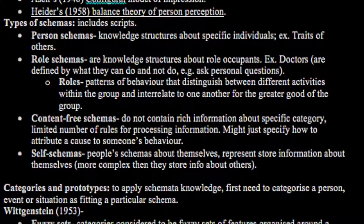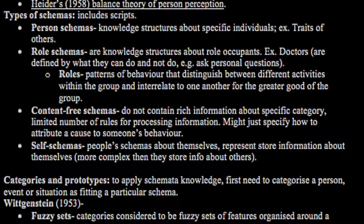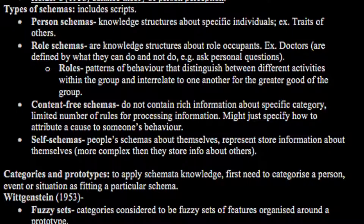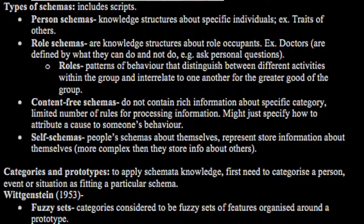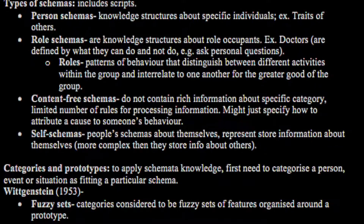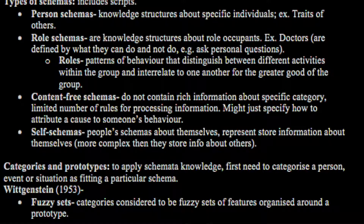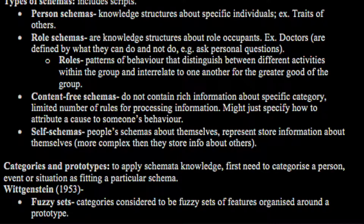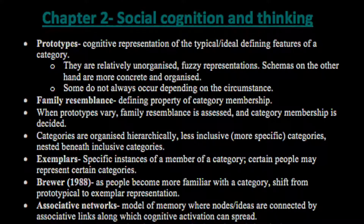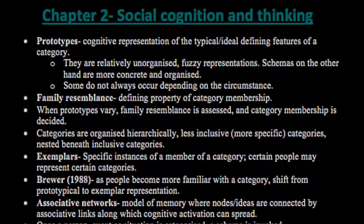Self-schemas are person schemas about oneself, representing stored information about ourselves, and they have more complex information than schemas about other people. Categories and prototypes: to apply schema knowledge, you first need to categorise a person, event or situation as fitting a particular schema. Wittgenstein in 1953 proposed fuzzy sets — categories considered to be fuzzy sets of features organised around a prototype. A prototype is a cognitive representation of the typical or ideal defining feature of the category. Schemas, on the other hand, are more concrete and organised.